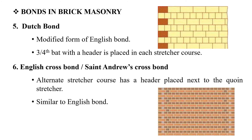The next bond is the Dutch bond, which is a modified form of the English bond. The difference lies in the stretcher course: it starts with a 3-quarter bat instead of a full stretcher, and a header is placed at the corner. This distinguishes it from the standard English bond.